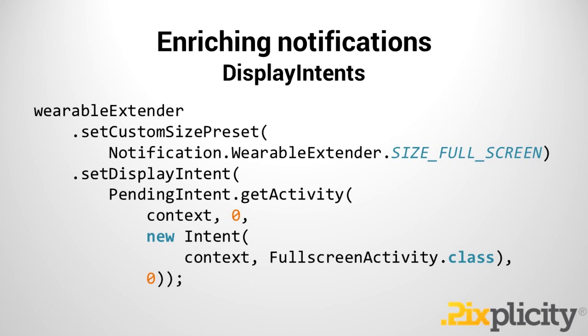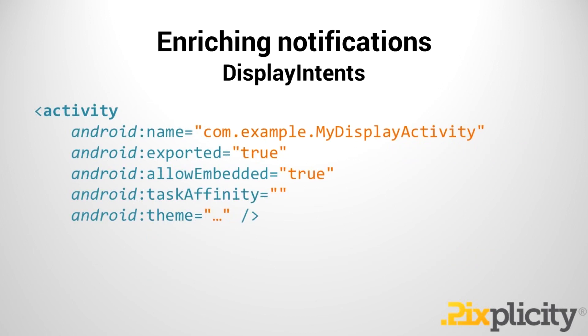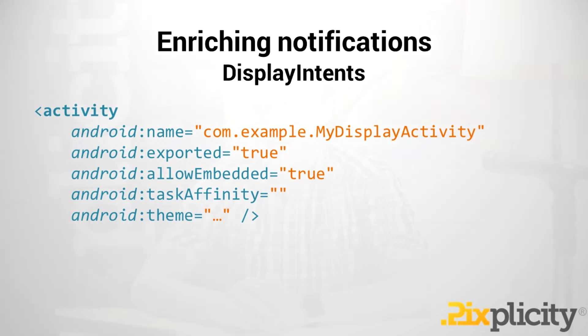There's one small thing to pay attention to: when you declare the activity in your Wear module's manifest, you have to make sure that you export the activity, allow for embedding, and set the task affinity to nothing. This is to allow the Android system to access the contents of your activity so it can be displayed as part of the system UI in the card layout.